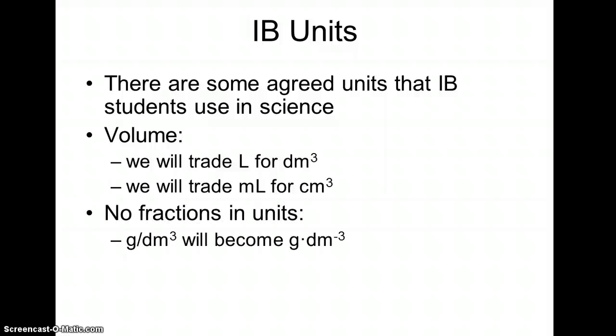The other change that we'll make as we enter IB is eliminating fractions in units. For example, density could be recorded as grams per cubic decimeter. But instead, we're going to write this as grams times decimeters to the negative third. The negative third means the same thing as the decimeters cubed on the bottom of a fraction. But this allows us to eliminate some mathematical error later on within our units. It's a habit that we're going to get into, and it's a standard that we're going to stick with. I hope this has helped with uncertainty. Let me know if you need a little more guidance.